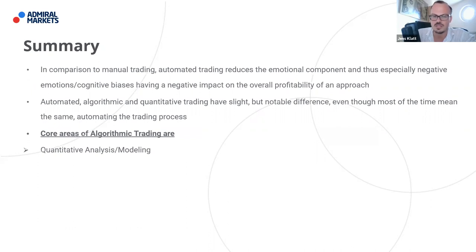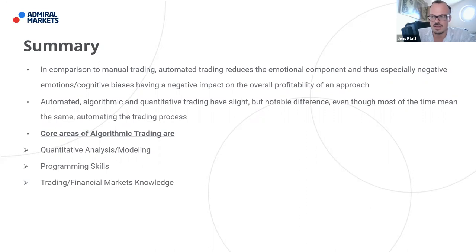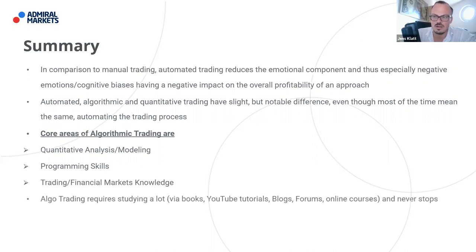The core areas of algorithmic trading are: first, quantitative analysis and modeling; then programming skills; and trading and financial markets knowledge is essential. Algorithmic trading requires continuous studying — it's not that you learn how to program and then just stop and focus on trading. It goes hand in hand, and the journey is the reward to some extent. There's lots of information on the internet on algo trading: books, tutorials, YouTube tutorials, and some very good blogs and forums.